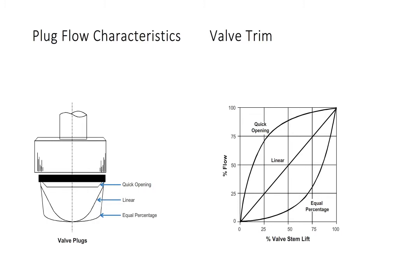When the quick opening plug is stroked only 25%, the flow through the valve is about 75%. When stroked 50%, the flow is nearly 80%. A minimal movement of valve stem lift results in a very large change in water flow.